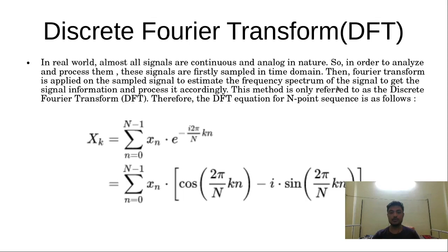This is referred to as the discrete time Fourier transform, and then we sample the Fourier transform to get a discrete Fourier transform.